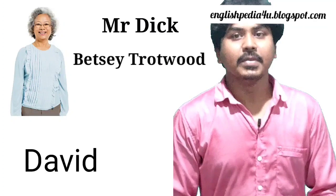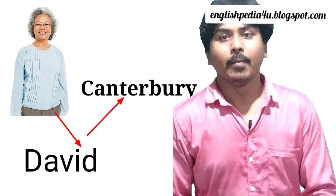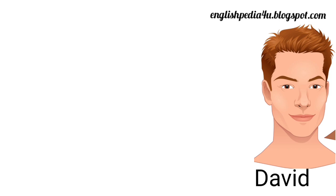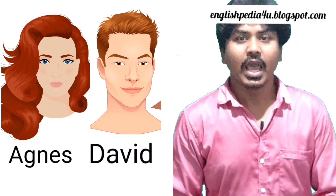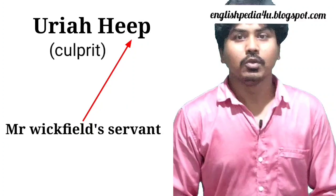Miss Betsy sends David to school in Canterbury, run by a man named Dr. Strong. David lives with the Wickfield family — Mr. Wickfield and his daughter Agnes. Agnes is around David's age and will continue to be a significant influence in his life. Here we also meet another character, Uriah Heep, who serves as the villain in the novel. He is Mr. Wickfield's servant.